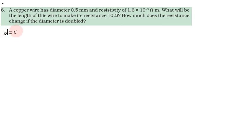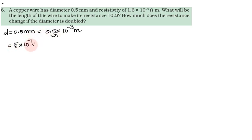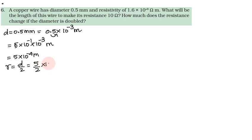Copper wire has diameter 0.5 mm. Milli is 10 power minus 3 meter. So, moving the decimal point gives 5 into 10 power minus 1 into 10 power minus 3 meter. So, radius is diameter divided by 2, which gives 10 power minus 4 meter. Resistivity rho is equal to 1.6 into 10 power minus 8 ohm meter.